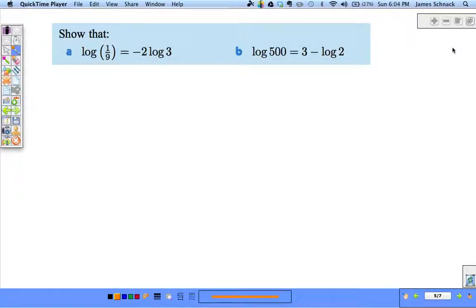Show that these are true. Okay, so, that means we only get to work with one side. We need to show that this side can become that side, or that side can become this side. It doesn't really matter, but we really shouldn't work with both sides.